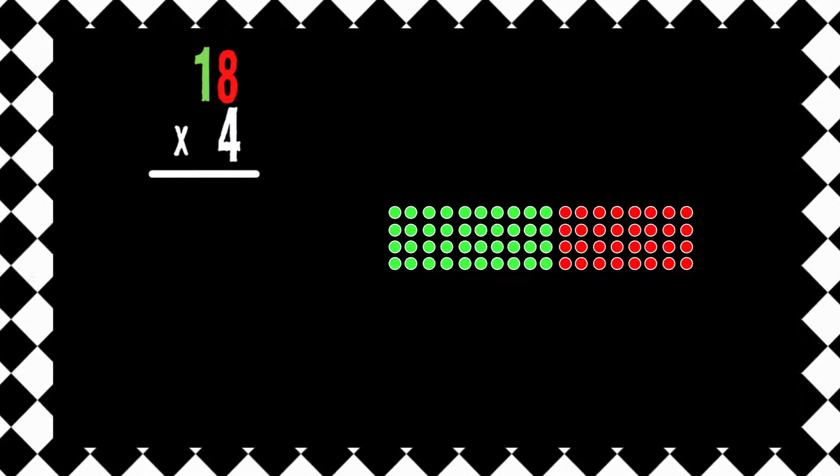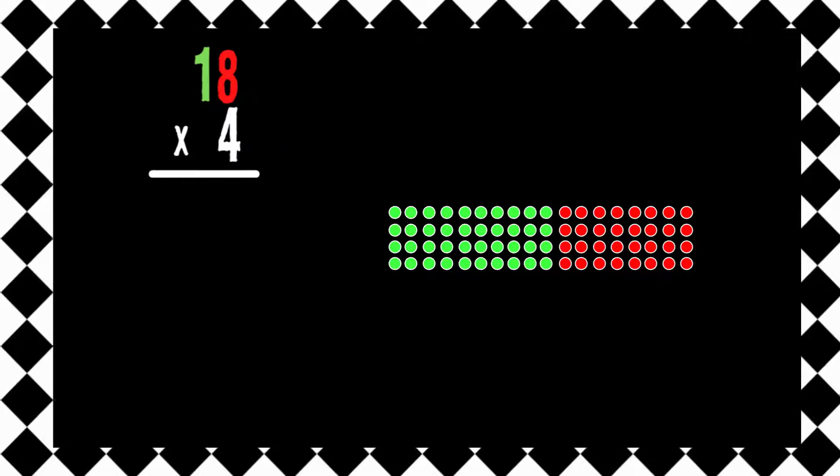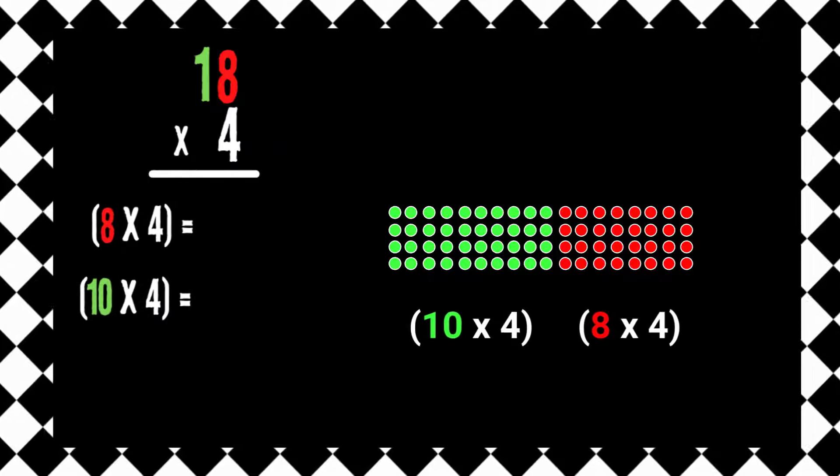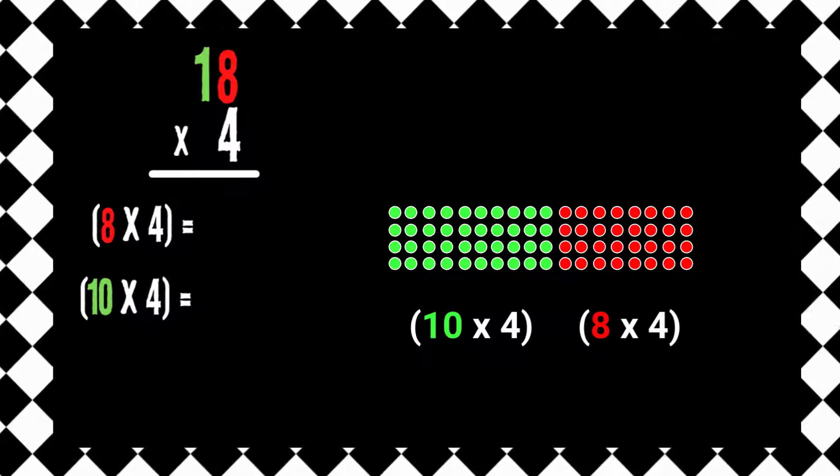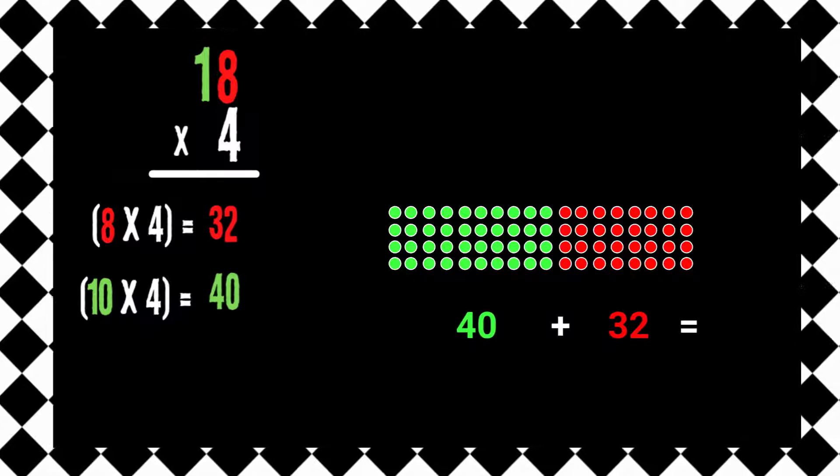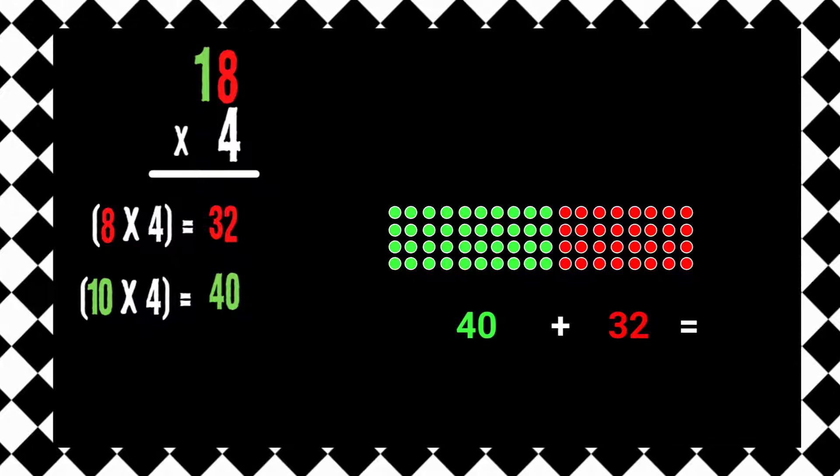Take your final product. Take an array, break it apart. Multiply to find the parts, then add them back — multiply and add them back together.